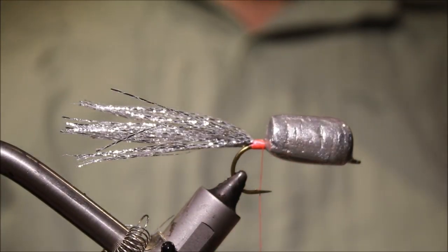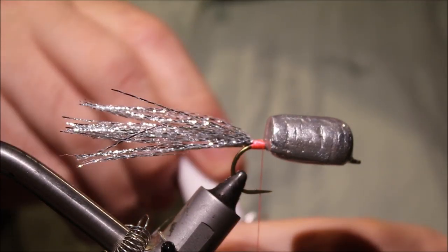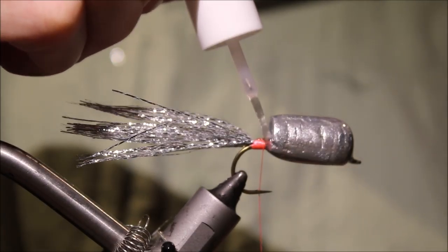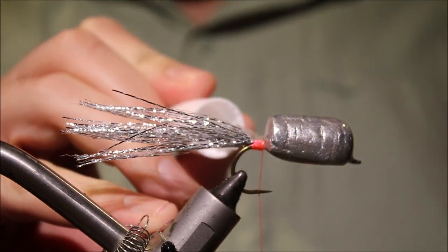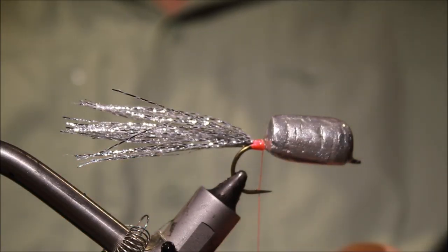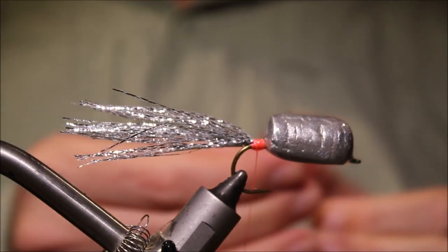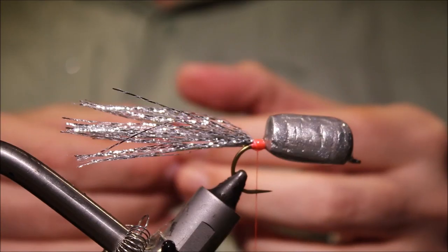At this stage, again, just to keep a bit of toughness in the fly, I'm going to just take some head cement, stick it over those thread wraps. And then the last bit of tie-in, really, is just the collar.